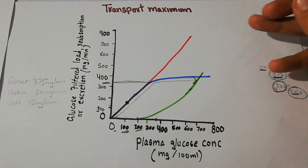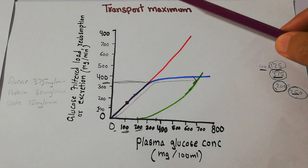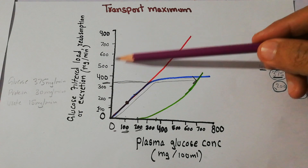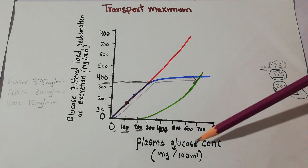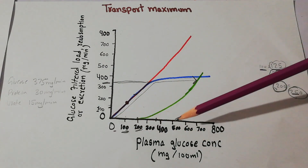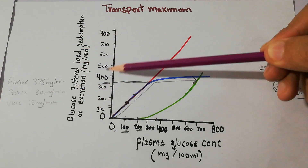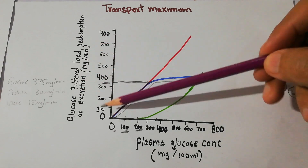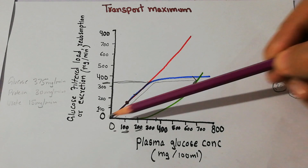The topic to discuss today is transport maximum — how it occurs and what it is. To understand this topic, we will need to understand this graph in which we have shown certain curves. In this graph, we have plotted plasma glucose concentration on the x-axis, and glucose filtered load, reabsorption, or excretion on the y-axis. Three components are being represented on the y-axis and plasma glucose concentration on the x-axis.